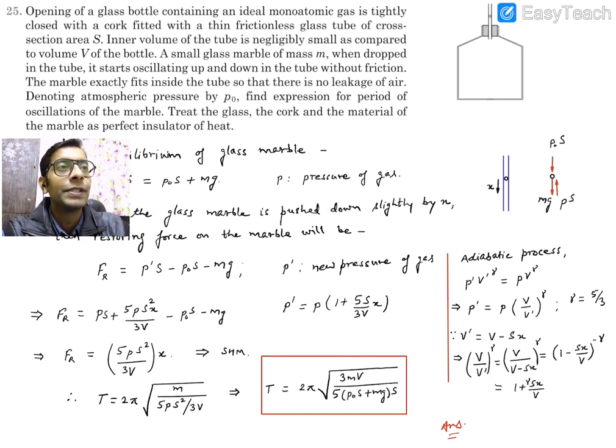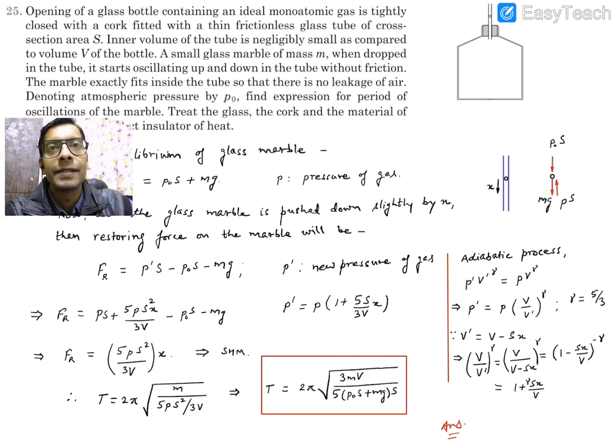So this is a picture, let me re-explain what it says. There is a glass tube here and there's a marble on this tube which is not allowing the air to cross and it is oscillating, so we need to find out this time period of oscillation. So let's see the solution.